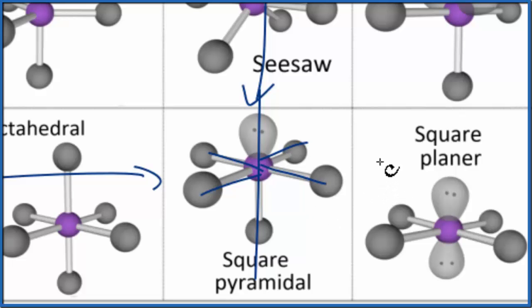This is Dr. B with the molecular geometry and bond angles for ICl5, iodine pentachloride. Thanks for watching.